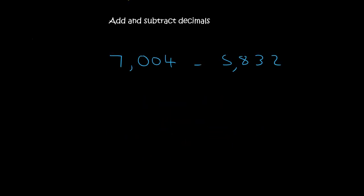So this one's quite cool. So we've got 7.004. Let's make that a 0. Minus 5.832. And so 4 minus 2 is 2. 0 minus 3 you can't. So you go borrow.